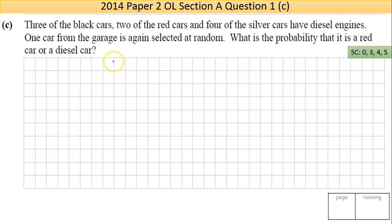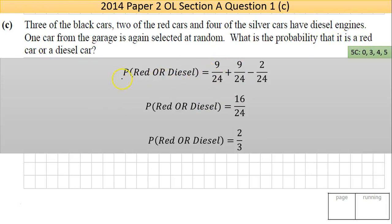So, we'll keep going. Now, part C here. Three of the black cars, two of the red cars, and four of the silver cars have diesel engines. One car from the garage is, again, selected at random. What's the probability that it is a red car or a diesel car? So, let's go look at the answer here.